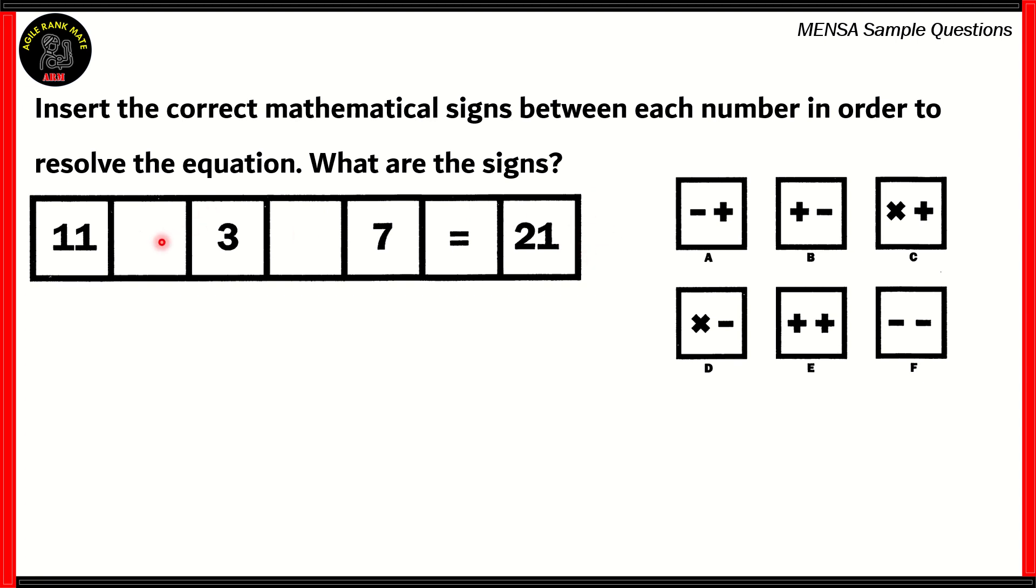Now if you look at each of the pairs, the way that this works is if option A says minus and then plus, we need to put the minus first and then the plus. So we'll subtract first and then we add. So we're going to make sure that we follow the exact order that's given in each of the options and see which of these yields us 21.